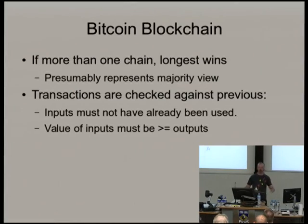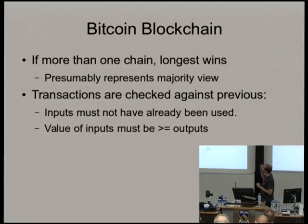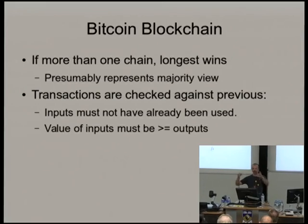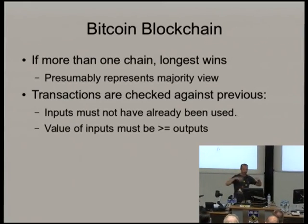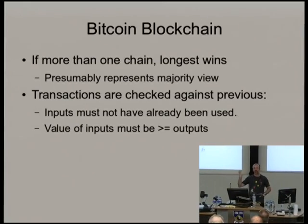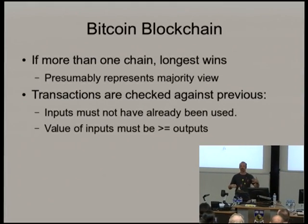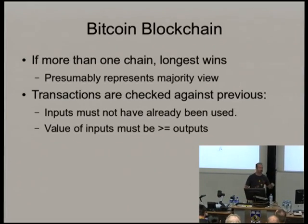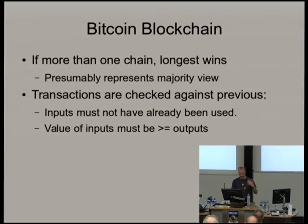Transactions are checked. When someone solves a new block, you check: yes, have they done enough work? Then you look at all the transactions — they have inputs that must come from previous outputs, so you match them together. There can't be any double spends. You can't spend something twice. And the value of the inputs must be greater than or equal to the value of the outputs — you can't put $200 out when you're only spending two cents in. So everyone checks that they're all good, and away we go on to the next one.